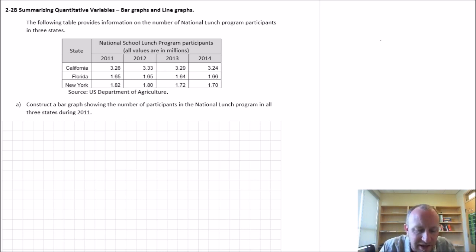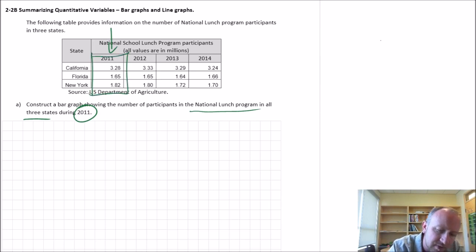So the first exercise that we have here, it says specifically we're looking at this information on the National Lunch Program in all three states, specifically only in 2011. So we're only looking at this piece of information here. So right away, I know this is cross-sectional because I'm only looking at one year. So then how can we draw this? Well, this is a bar graph.